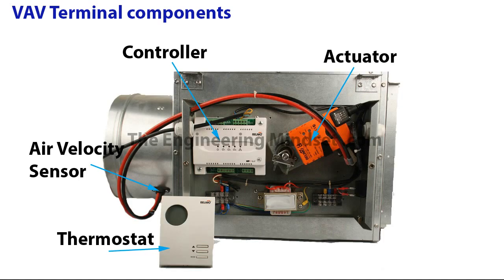And then looking at the controls point of view, we've got the thermostat, the air velocity sensor, the controller, and then the actuator. Don't forget the actuator is the device which controls the position of the damper inside the duct.